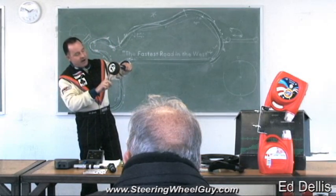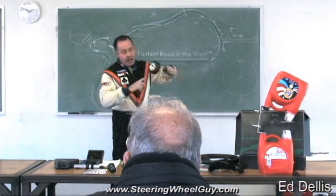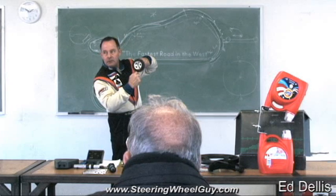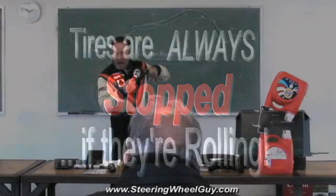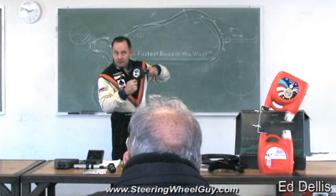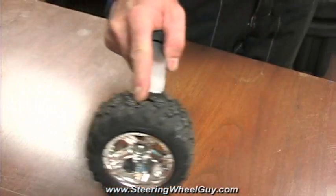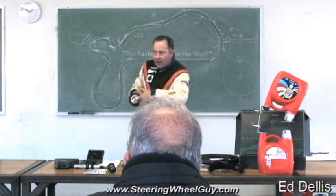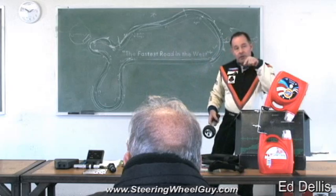How fast is the tire going at the contact point? Zero. At the bottom, it stopped. If the tire were moving, it would be sliding. But as long as you keep that tire rotating, the contact patch is stopped on the ground.